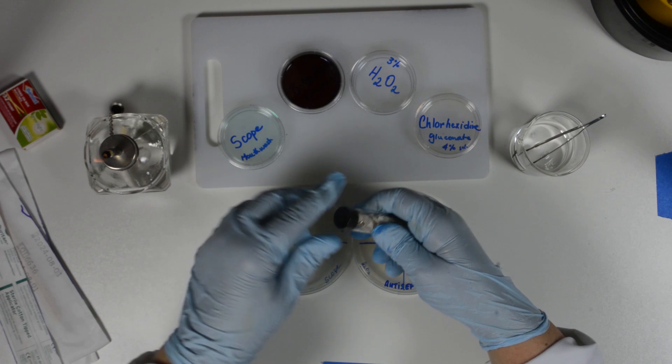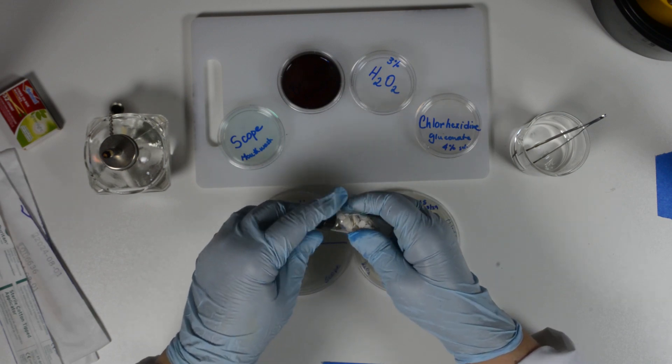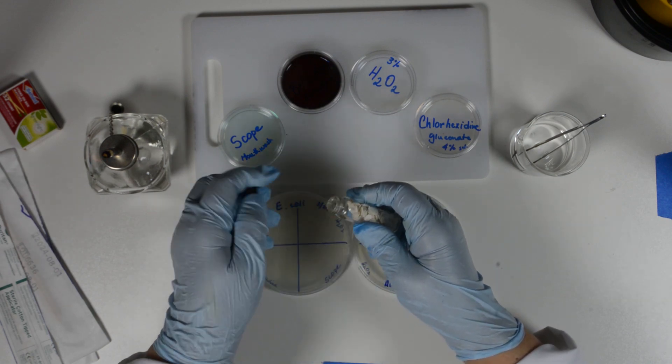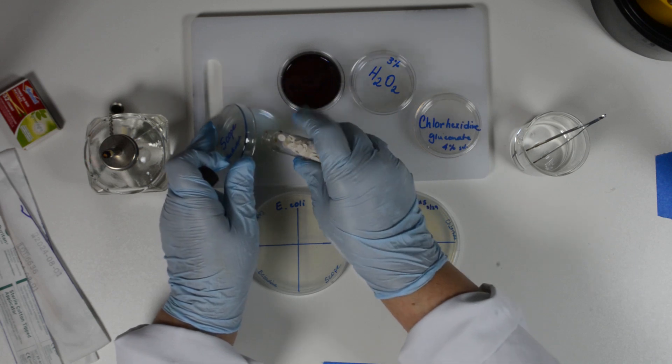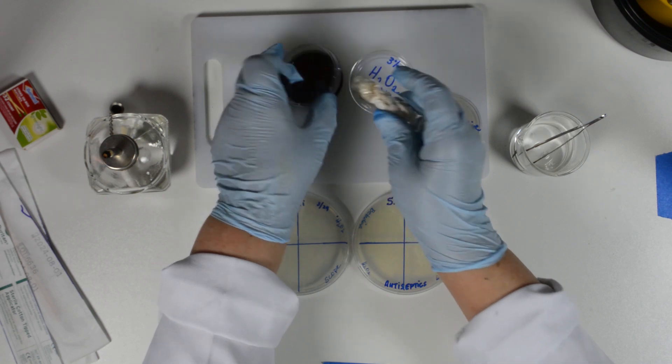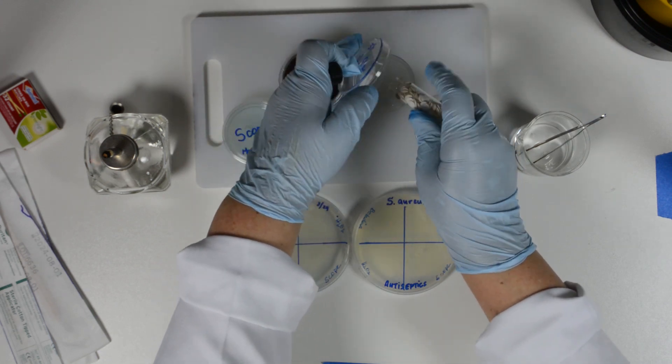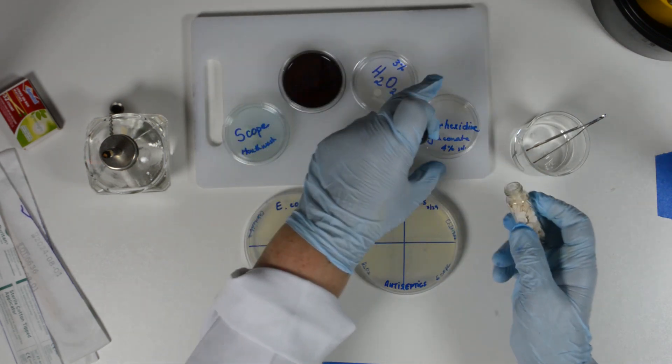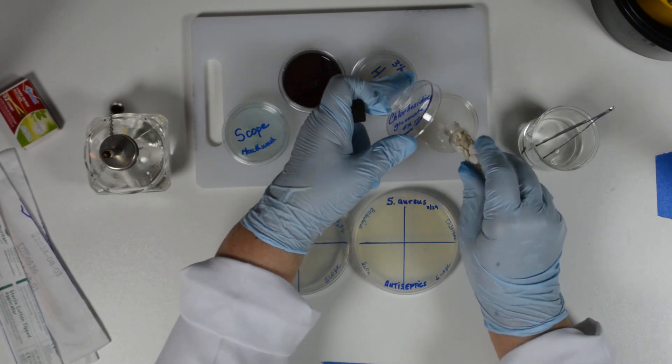We used sterile filter paper discs, 6mm, that we soaked with common household chemicals. Small amounts of each chemical were poured into 55mm diameter Petri dishes, labeled them, and a few blank sterilized discs were dropped into the chemicals.